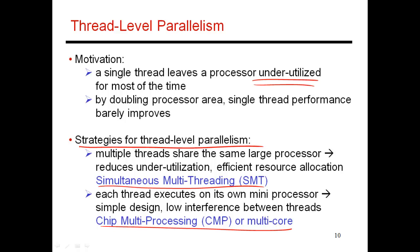The whole motivation is: if I build a processor with an issue width of four, the average IPC is usually around 1.5. That means every single cycle, on average, 2.5 of the units are going underutilized. So instead, if I ran two threads together, each thread would have an IPC of close to 1.5, and the net effect would be that my average total IPC would be close to 3.0. That is the whole motivation for wanting to cram two different threads into the same core.